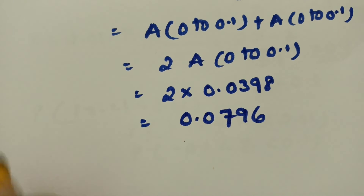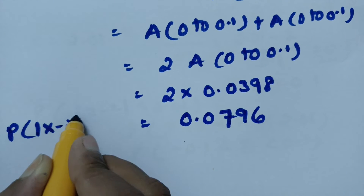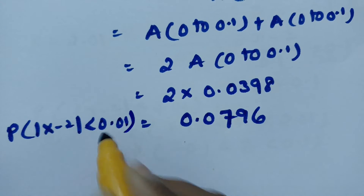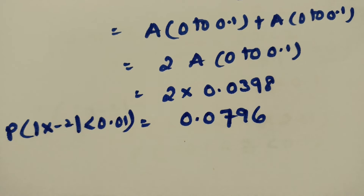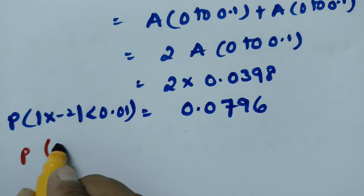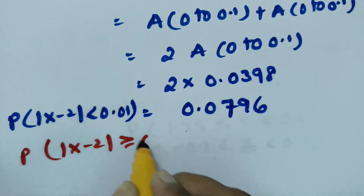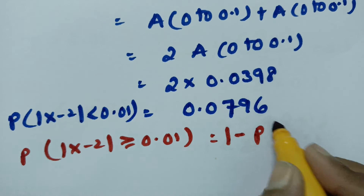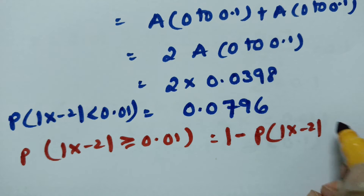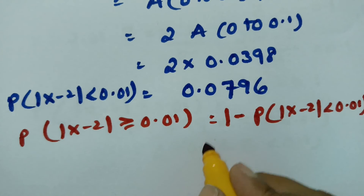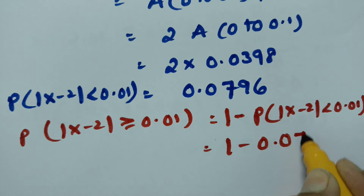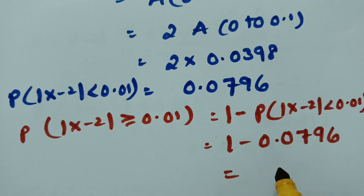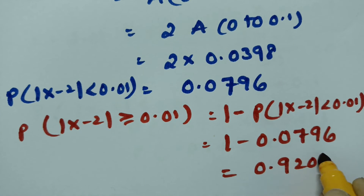This gives us the probability of modulus of x minus 2 less than 0.01 as 0.0796. Now we need the greater than or equal to value. Using the complement rule — since total probability equals 1 — the probability of modulus of x minus 2 greater than or equal to 0.01 equals 1 minus 0.0796, which is 0.9204.